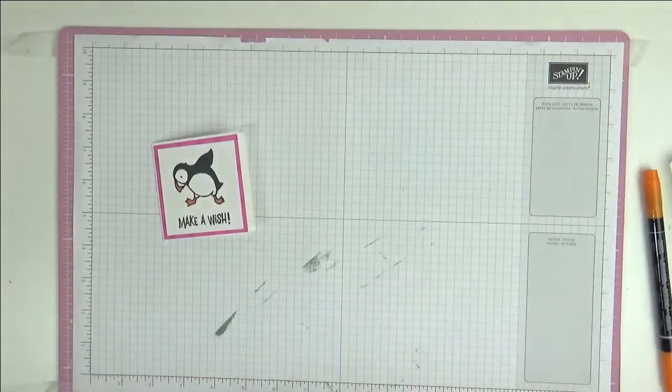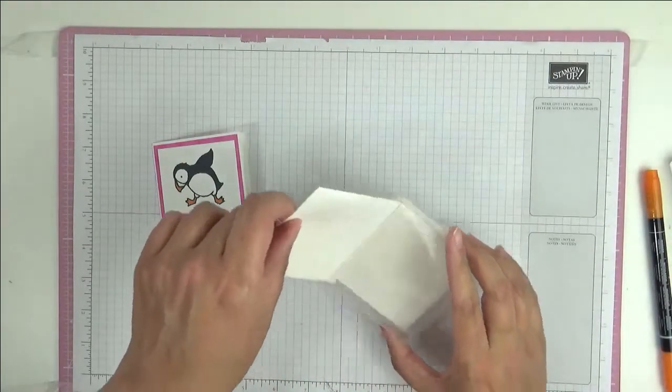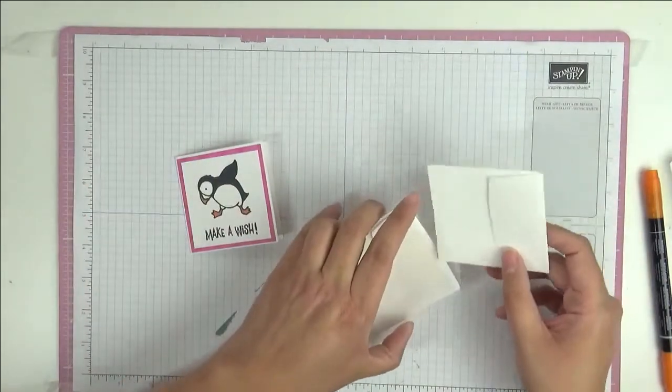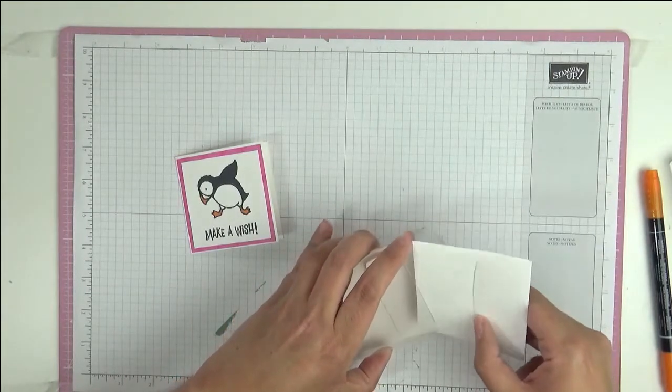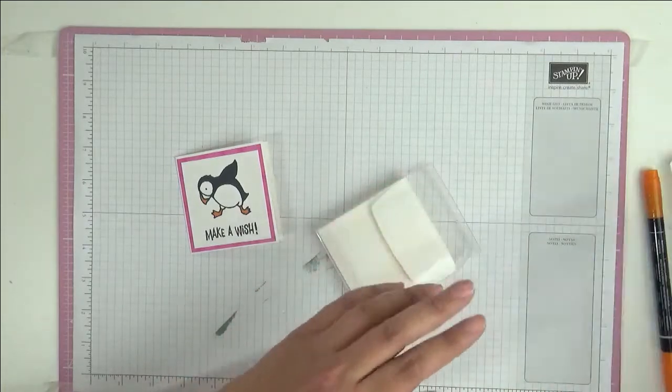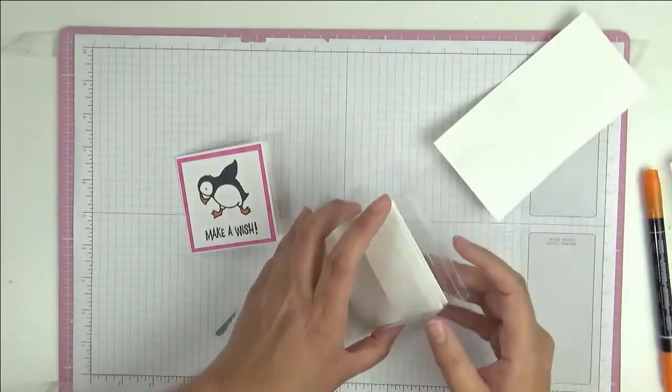Now, I don't know if you know, but Stampin' Up sells these lovely dinky little 3x3 envelopes, perfect to fit our little cards. I've just cut this down from a piece of 12x12 cardstock, but you can also use thick basic white. I've cut the base down to three inches by six inches and then scored it at three inches on the long side.